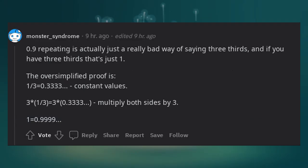0.9 repeating is actually just a really bad way of saying three-thirds. And if you have three-thirds, that's just one.